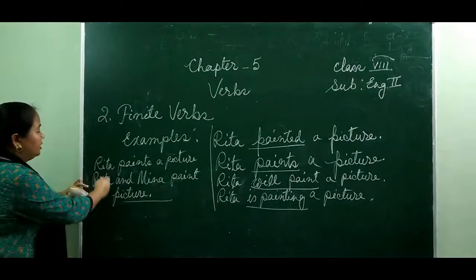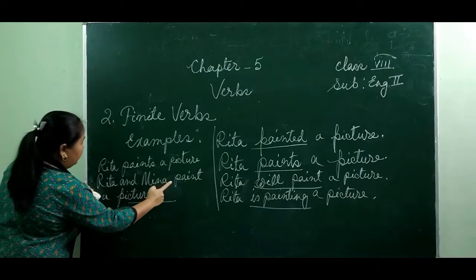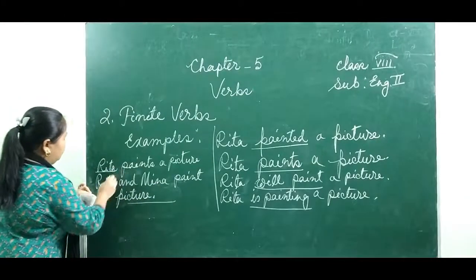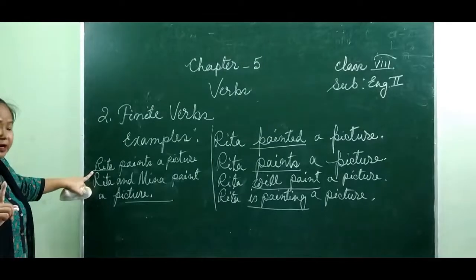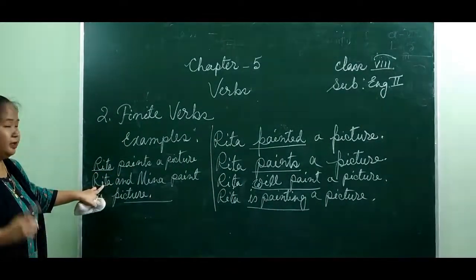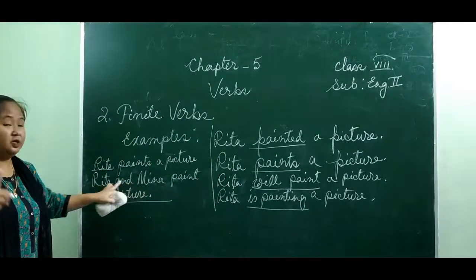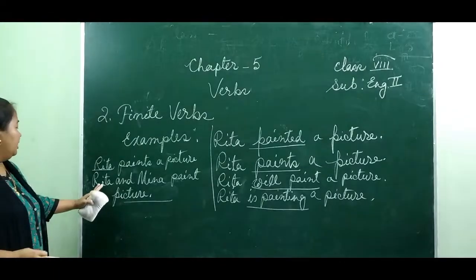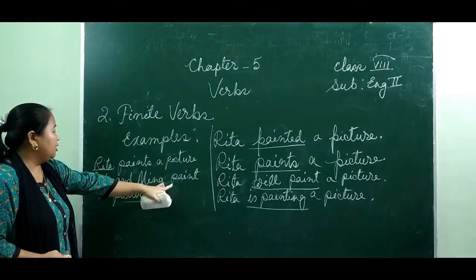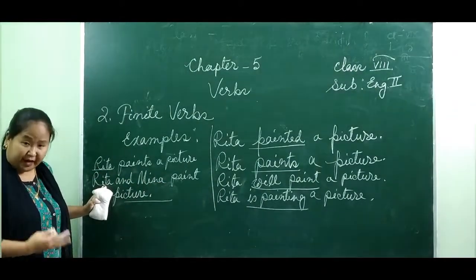Here in this example: 'Rita paints a picture' — Rita and Mina paint a picture. Rita is third person singular number, so the verb is 'paints.' Rita and Mina together are third person plural, so the verb is 'paint.' The verb changes according to the number of the person during the action.